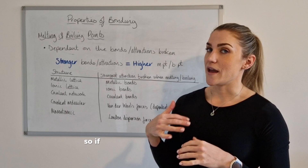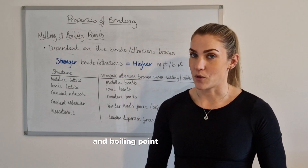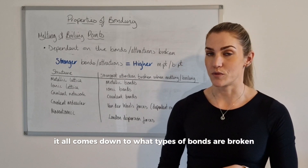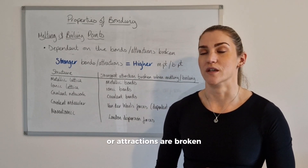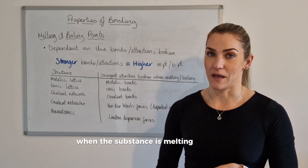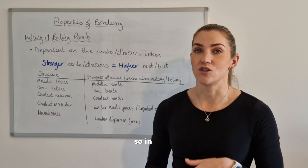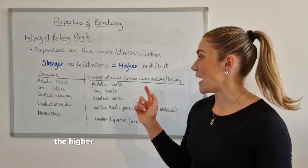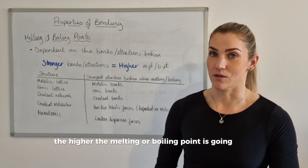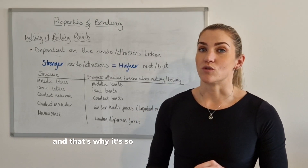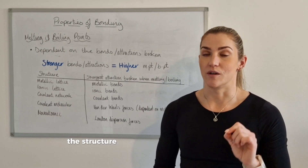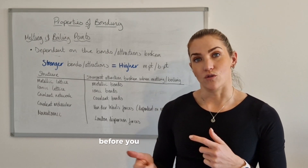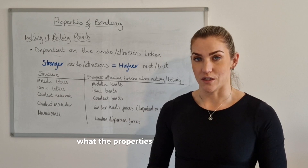If you're ever asked about the melting and boiling point of a substance, it all comes down to what types of bonds or attractions are broken when the substance is melting or boiling. In short, the stronger the bonds or attractions you're breaking, the higher the melting or boiling point is going to be. That's why it's so important to identify the structure and bonding within a substance before working out what the properties are going to be.